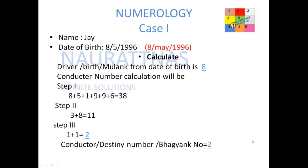Now we will study case study one. Here we will study the case of Mr. Jai. Mr. Jai is born on 8th of May 1996. Now we will calculate his driver number, which is also his birth number. He is born on the 8th day, so the driver number will be 8.